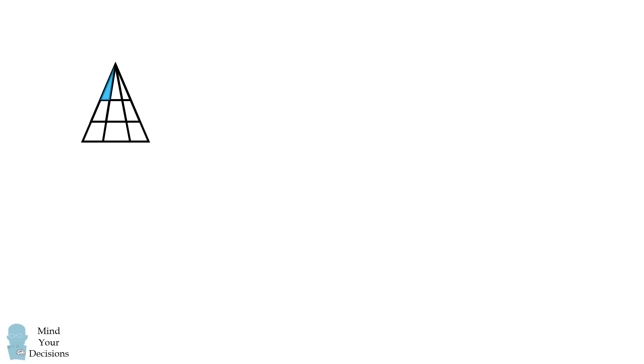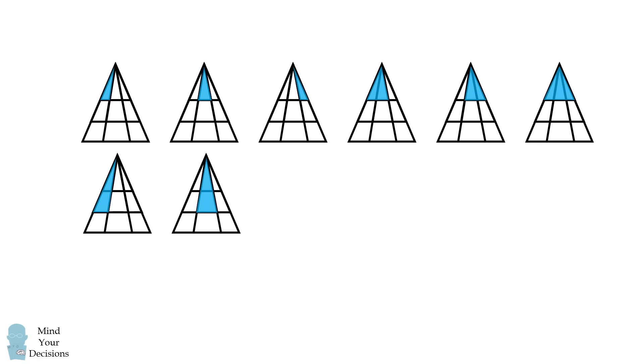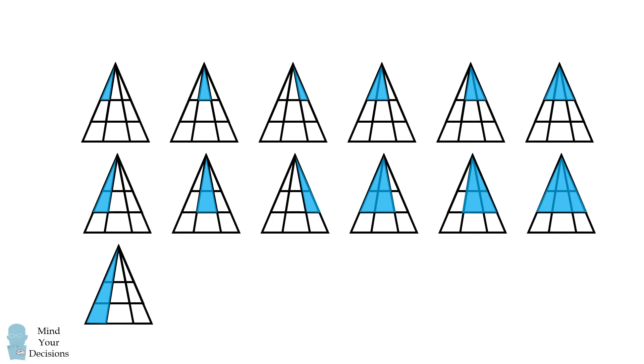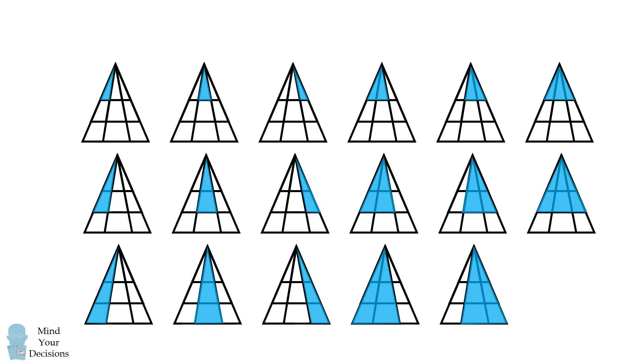So one way you could solve this problem is by counting every single triangle in the figure. This will be an exhaustive list of all of the triangles. If you're careful, you'll get the correct answer of 18 triangles.